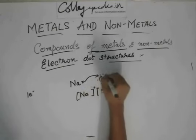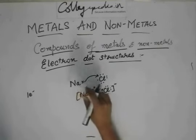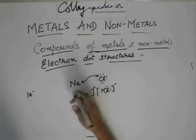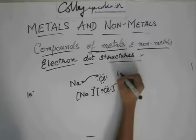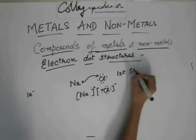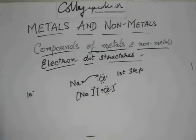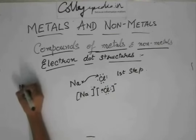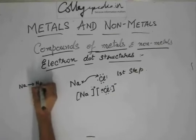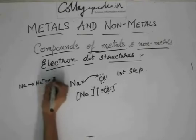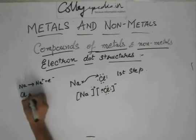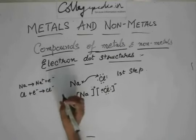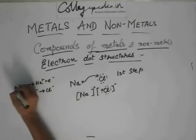So, you have to show this transfer of electrons from Na to Cl. And then, show this. First step, you show this. Or first, you have to write all these things. That Na becomes Na plus, plus electron. Chlorine plus electron will give chlorine minus.